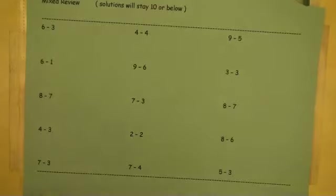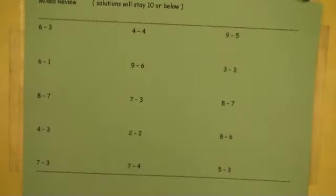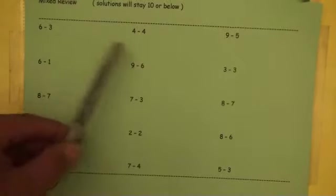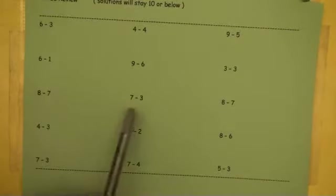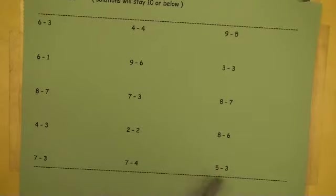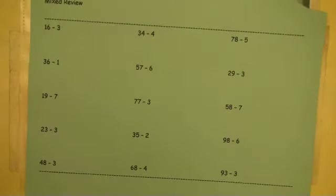Okay, a mixed review. Now we have 15 problems here. At some point in the game, you're going to want to be able to do a sheet like this in no more than 15 seconds. Alright, let's fire through it. 3, 0, 4, 5, 3, 0, 1, 4, 1, 1, 0, 2, 4, 3, 2. Guys, you've got to be able to fire through it.